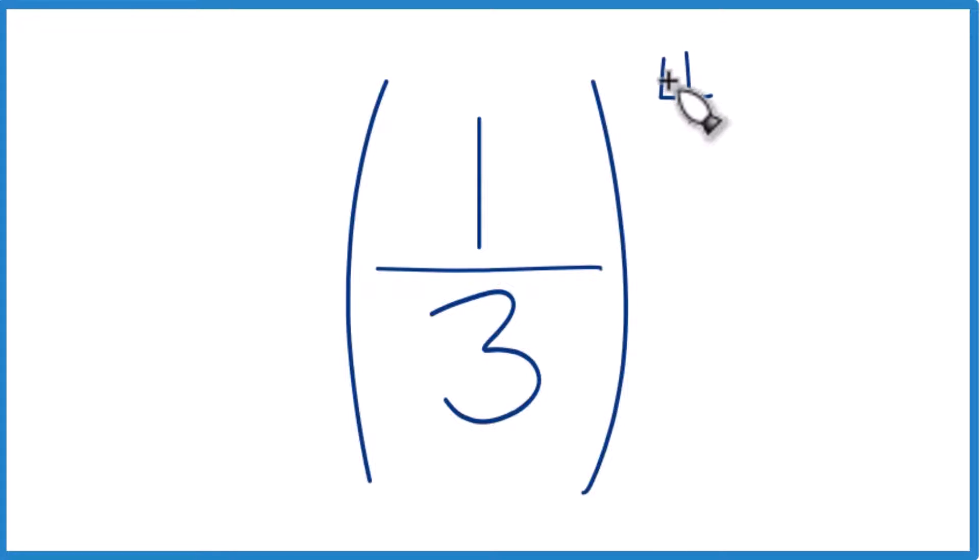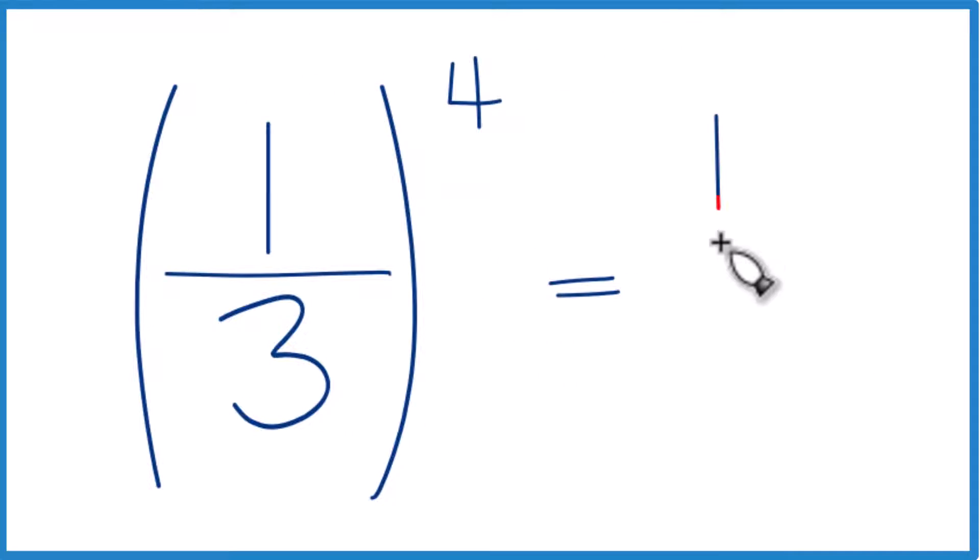So one-third to the fourth power. How do we do that? It's probably best to think of it this way: you could think of it as 1 to the fourth power over 3 to the fourth power.